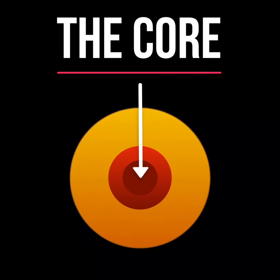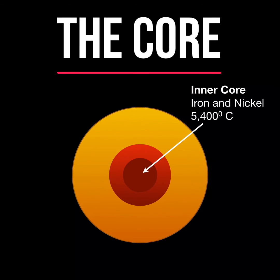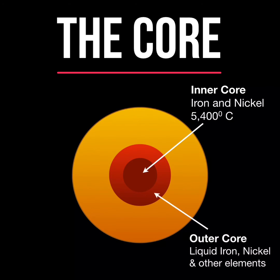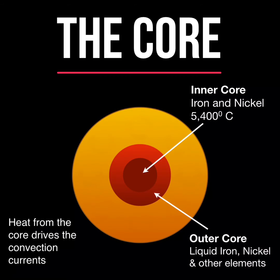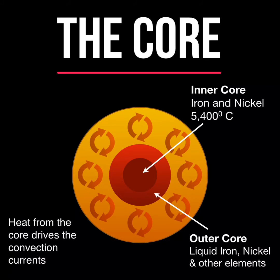The center of the earth is known as the core. The inner core is made of solid iron and nickel and has temperatures in excess of 5,000 degrees Celsius. The outer core is made of liquid iron, nickel, and other elements. Heat from the core drives the convection currents in the mantle, which cause the plates to move.